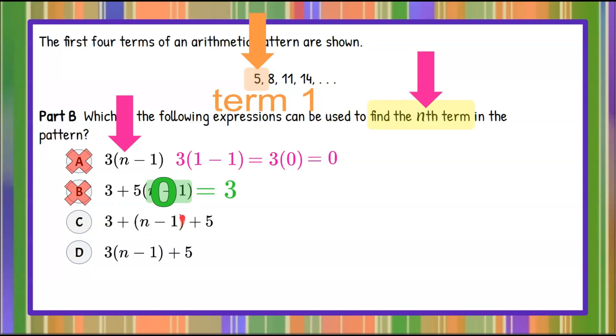Once again in C, we can see that this n minus 1 here will be 0. 1 subtract 1 is 0. So now I have 3 plus 0 plus 5. 3 plus 5 is 8. That is not our first term in our sequence. Therefore, I can eliminate C.